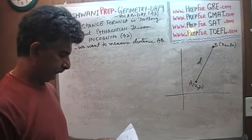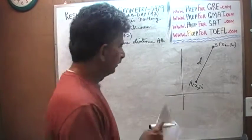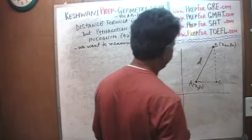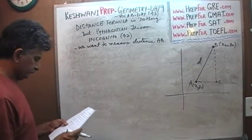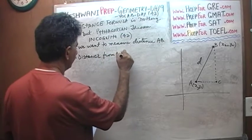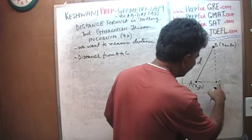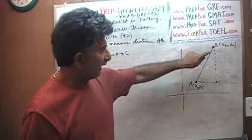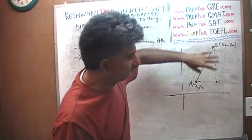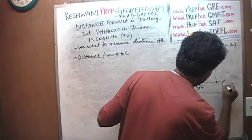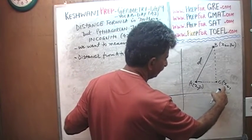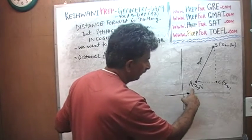Hence the distance formula. What we are going to do now is to make a right-angle triangle out of it. Let's call this point C. What is the distance from A to C? The X coordinate of C has to be the same as the X coordinate of B because the line BC is parallel to the Y axis. So the X coordinate of C is the same as the X coordinate of B, which is X2. So the distance from A to C must be X2 minus X1.